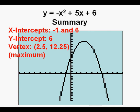Here are the key points for this quadratic function found using the calc menu: x-intercepts of negative one and six, a y-intercept of six, and a vertex which is a maximum at (2.5, 12.25).